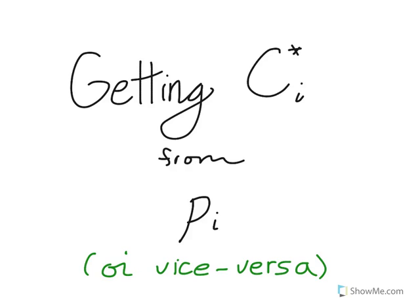When you're working with mass transfer equipment, you usually end up having to find this parameter called C star, or sometimes you have to find P star. It just stands for an equilibrium concentration or equilibrium partial pressure in the opposite phase. We're going to take a look at how you go about finding that and why you need to find it.